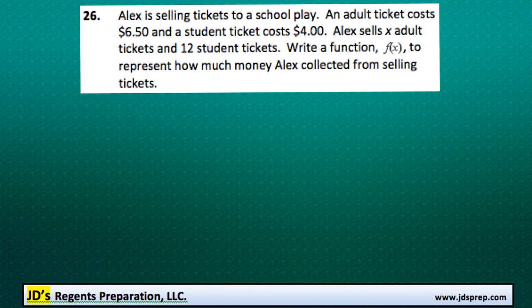This is problem number 26 from the June 2015 Algebra Regents Exam. Alex is selling tickets to a school play. An adult ticket costs $6.50 and a student ticket costs $4.